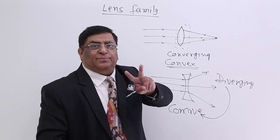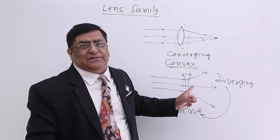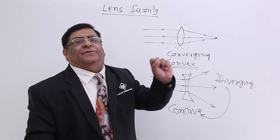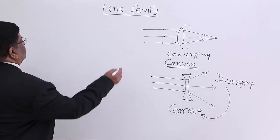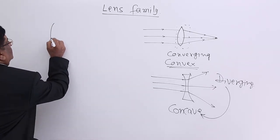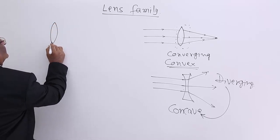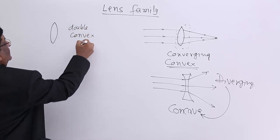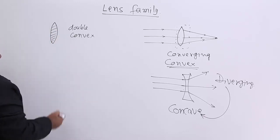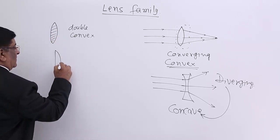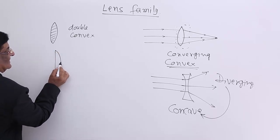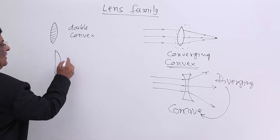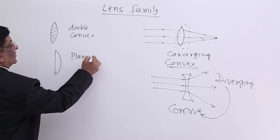There are two basic families of lenses: convex and concave, converging and diverging. Within each family there are different members according to shape. For the convex family, we have double convex — a glass medium thick at the centre and thin at the edges. Then we have plano-convex, where one side is plane and the other is curved.